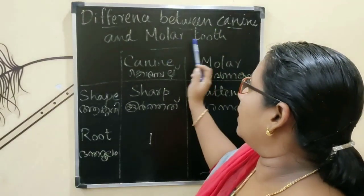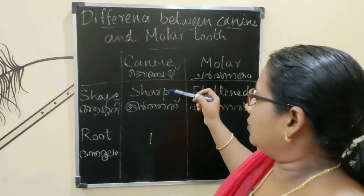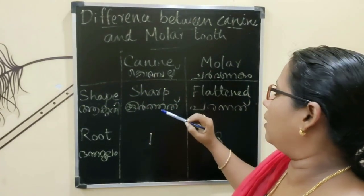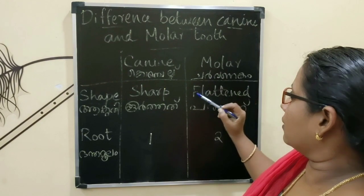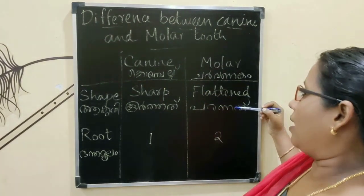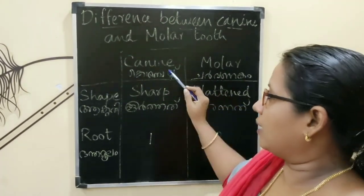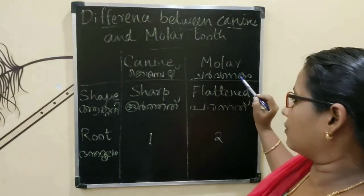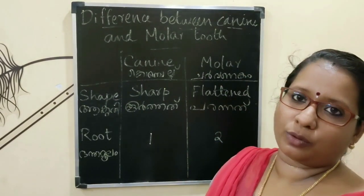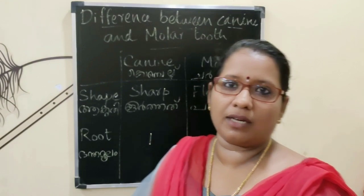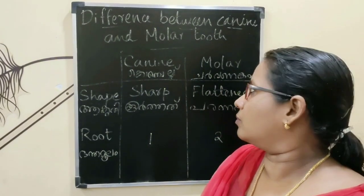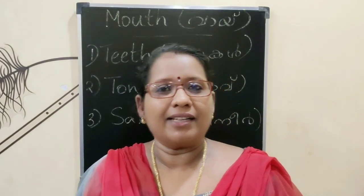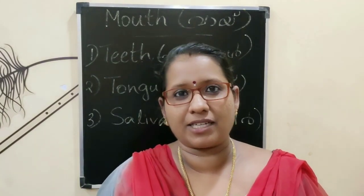Difference between canine and molar tooth: the canine's shape is sharp, and the molar shape is flattened. The root of the tooth is used in the mastication of food.